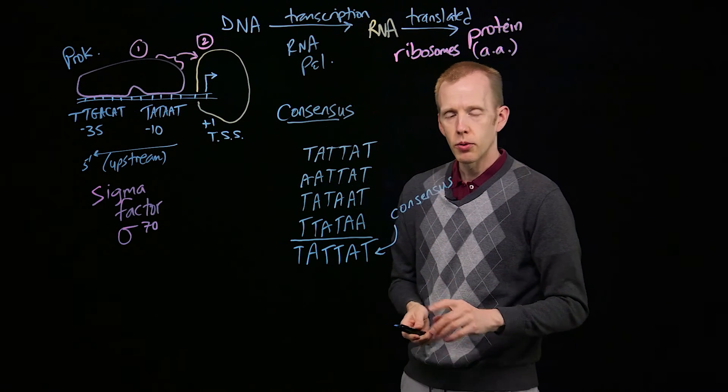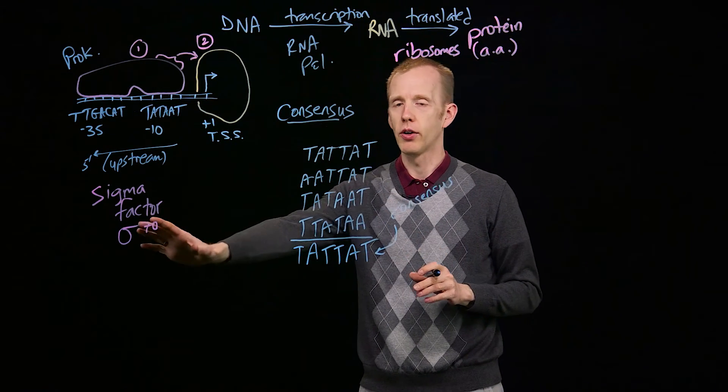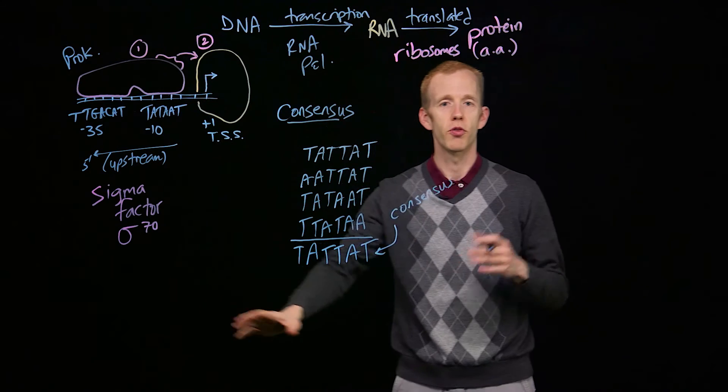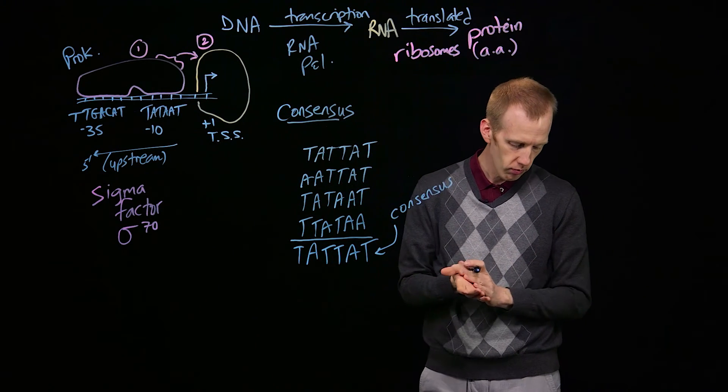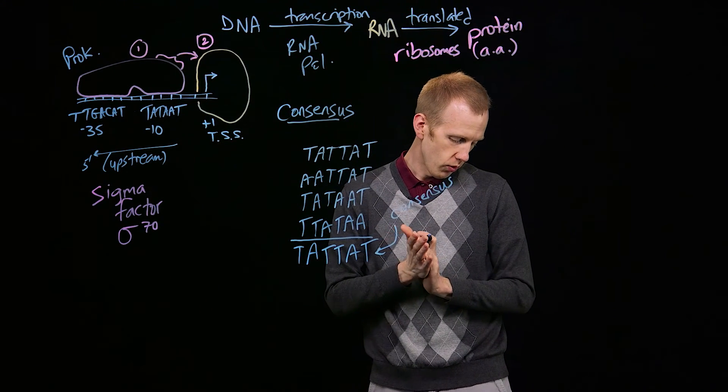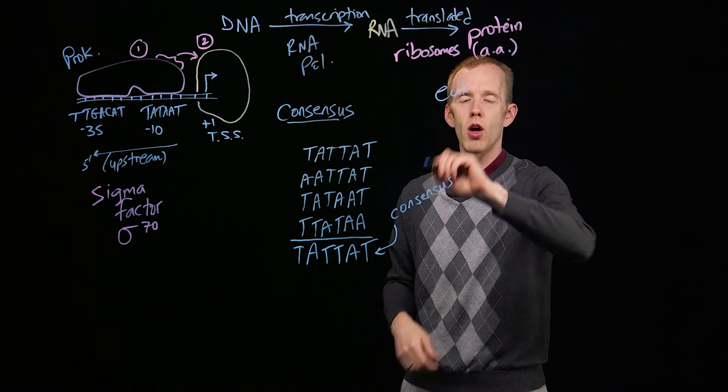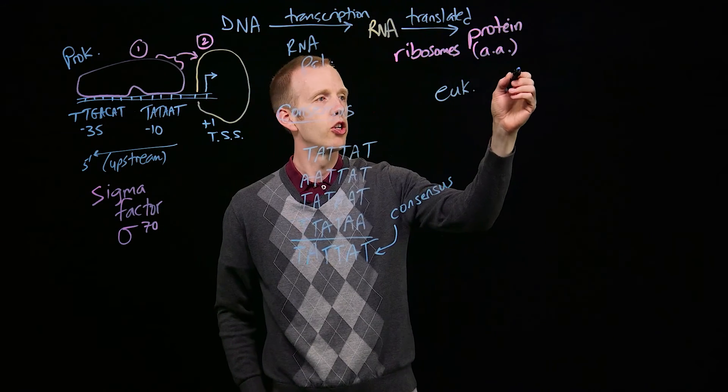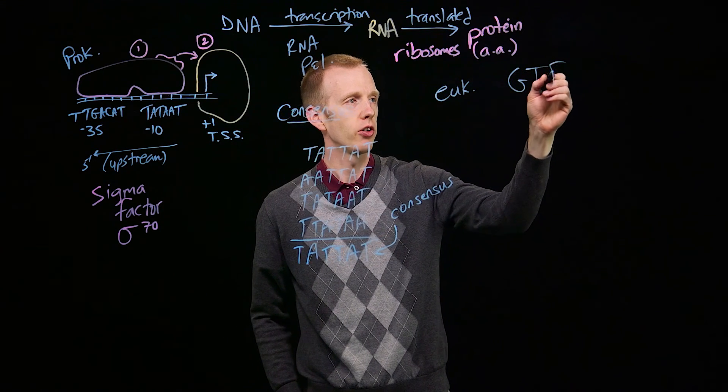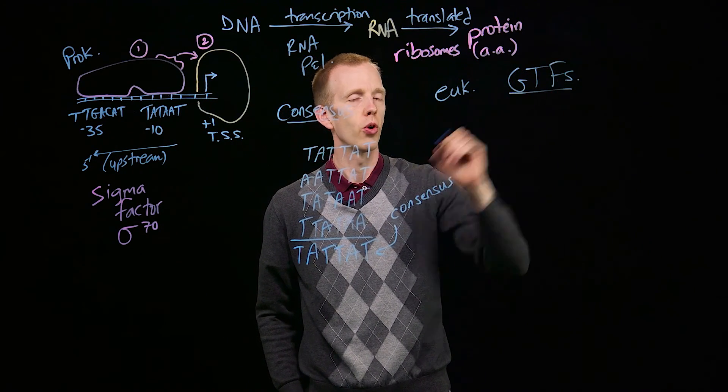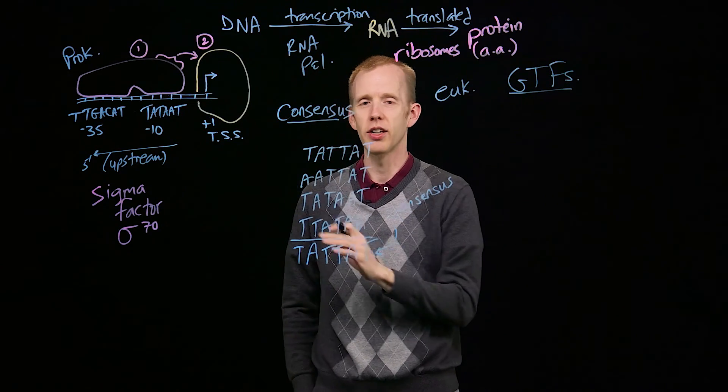And now let's talk really quickly about how prokaryotic transcription initiation differs from eukaryotic. So, in a eukaryote, instead of sigma factor, we have proteins called general transcription factors, or GTFs, but they work very similarly to sigma factor.